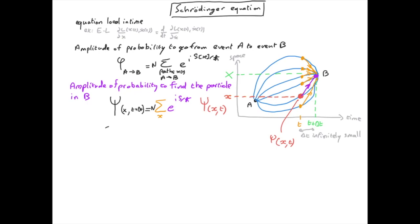Let us write the action for one of these paths. Remember that delta t is infinitely small so we don't need to integrate over t. The integral over t becomes simply the factor delta t. We write the Lagrangian as the difference of kinetic energy and potential energy, where velocity is capital X minus small x divided by delta t.